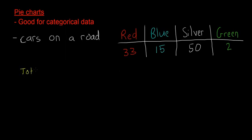So first of all, you calculate the total number of cars so you just add them all together: 33 plus 15 plus 50 plus 2, and you'll find the total number is equal to 100. Now we know that there are 360 degrees in a circle, and a circle is obviously the shape of our pie chart.